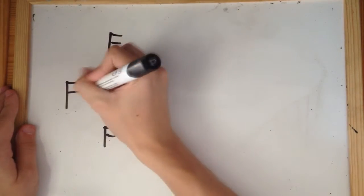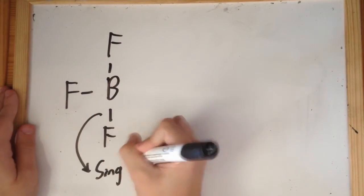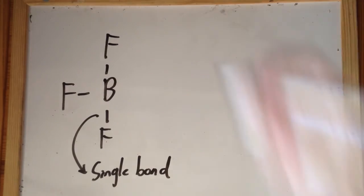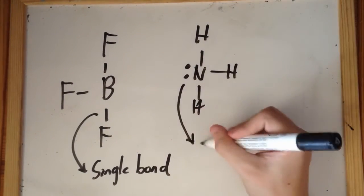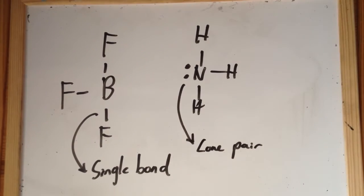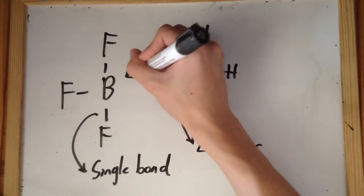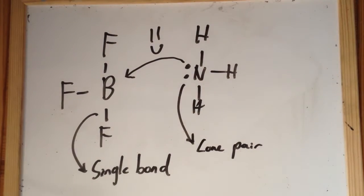We can represent this bond in a similar way to a normal covalent bond. However, to show the difference we need to illustrate the lone pair of electrons in the diagram of nitrogen being reacted with the boron. We do this by simply drawing an arrow from one of the electrons pointing towards the boron atom.